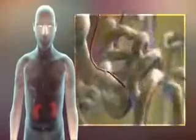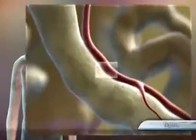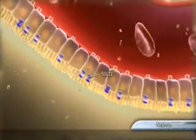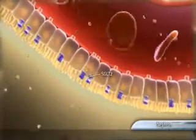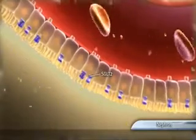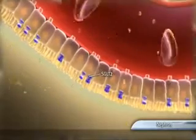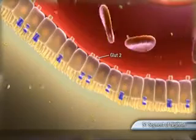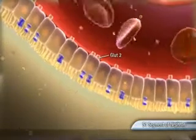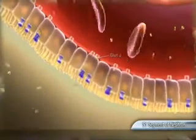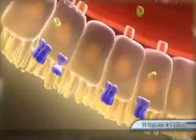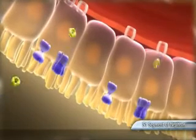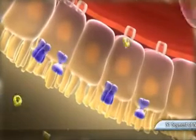Renal glucose reabsorption, mediated by the sodium glucose transporter 2, or SGLT2, is the primary mechanism by which filtered glucose is actively returned to the blood and retained in the body. SGLT2 actively reabsorbs about 90% of all filtered glucose in the S1 segment of the proximal tubule.